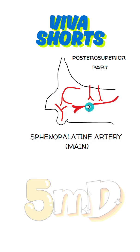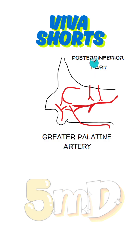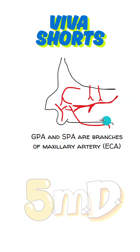The posterior superior part is supplied by the sphenopalatine artery — it is the main blood-supplying artery of the nasal septum. The posteroinferior part is supplied by the greater palatine artery. You can see the four arteries meet at this place, so this area has a rich supply of blood vessels.